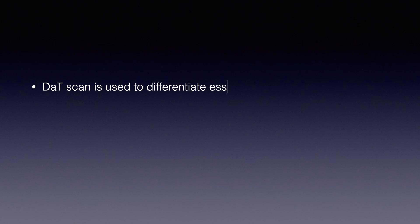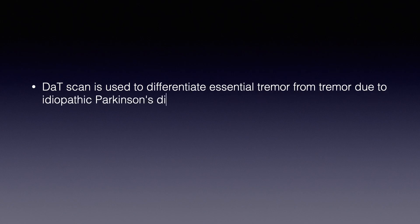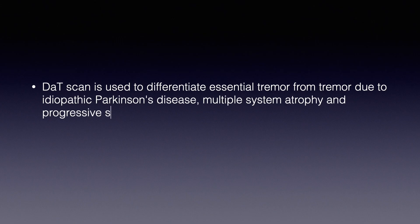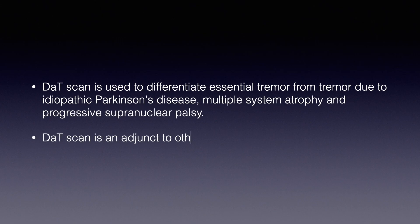The DAT scan is used to differentiate essential tremor from tremor due to idiopathic Parkinson's disease, multiple system atrophy, and progressive supranuclear palsy. The DAT scan is an adjunct to other diagnostic evaluations.